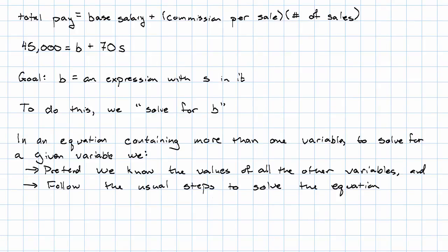If we have an equation with more than one variable in it, and we want to solve for one of the variables, we pretend we know the values of all the other variables, and then we follow the usual steps to solve the equation.